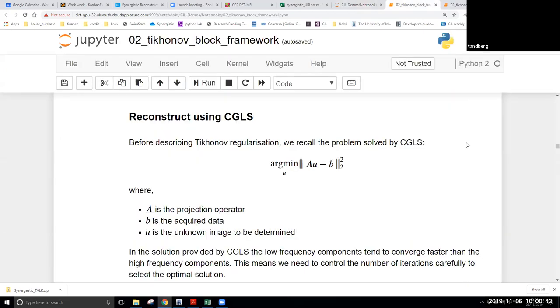In the previous exercise the main iterative algorithm we looked at was CGLS. And as Evelina was explaining, CGLS is based on the least squares formulation. We run a number of iterations. If we run enough, we will see convergence to this solution, but we may not want to go all the way because we'll have a lot of noise coming into our image, which is why we need to stop early. So, there's a regularizing effect of stopping early.